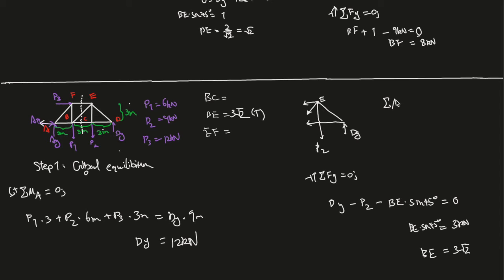Sum of moments at E equals zero. That equals force BC times 3 meters, it's going into the clockwise direction so it's negative. The other forces: this force is going straight from the joint so it doesn't do anything. The only other force is Dy, going counterclockwise, so Dy is positive times 3 meters.